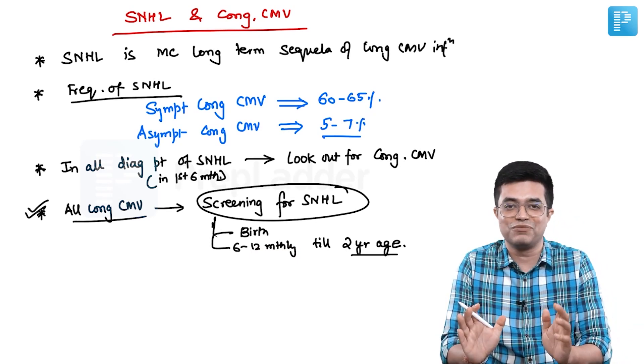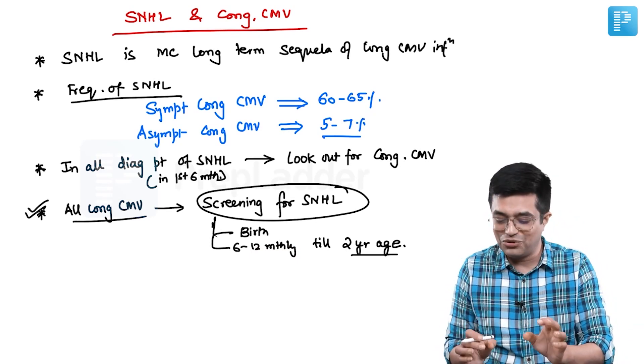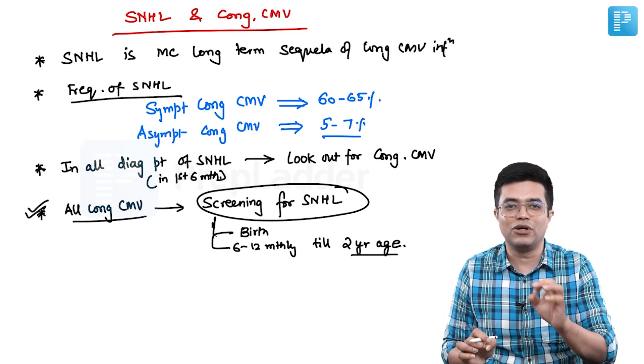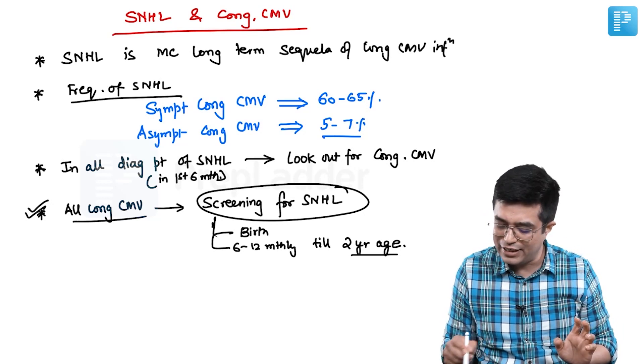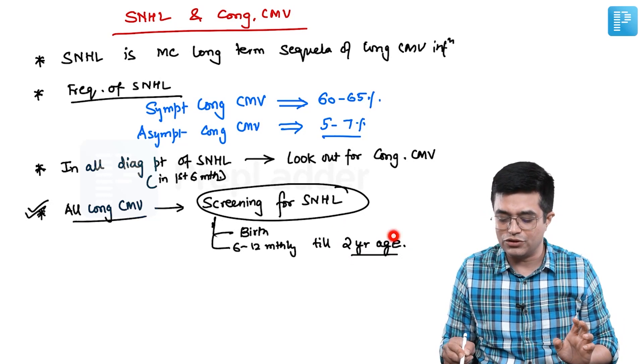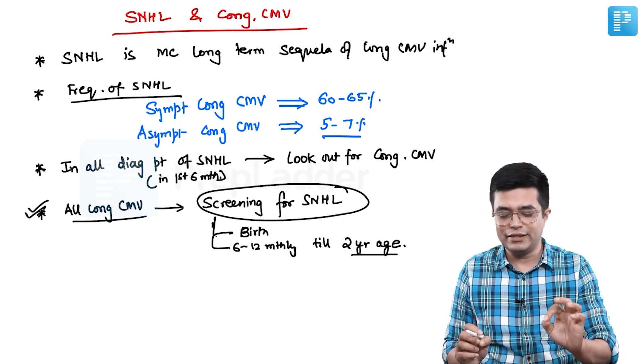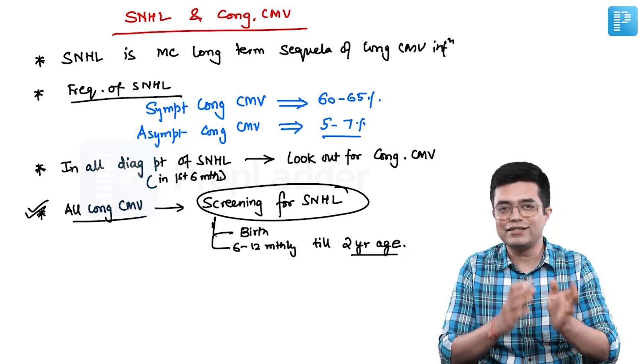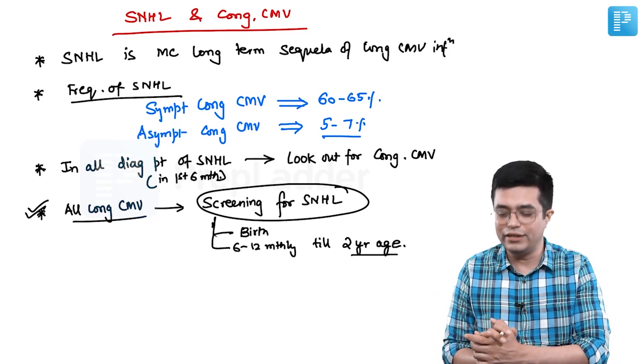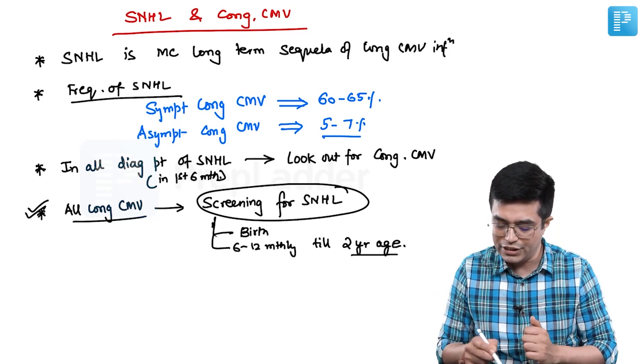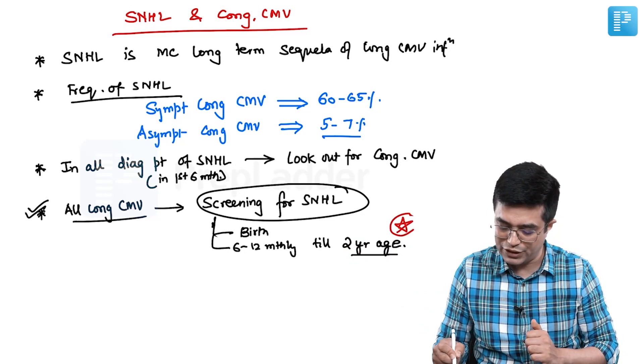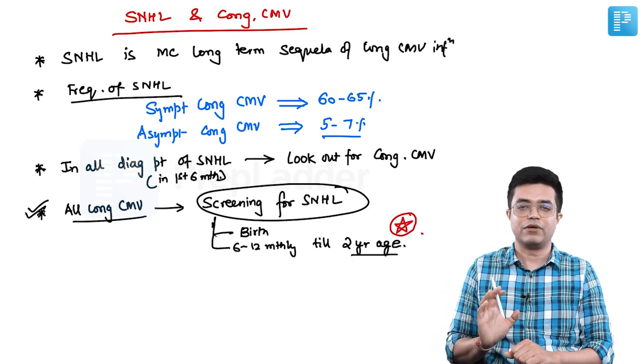The key thing which Nelson is very smart about, Cloherty is very smart - they don't give annual or biannual or any such thing. They simply mention that you have to do it till 2 years of age. So in all congenital CMV, even if they are asymptomatic, the screening or follow-up in ENT clinic needs to be done till about 2 years of age. This is the potential MCQ which can be asked. I am putting a star here.